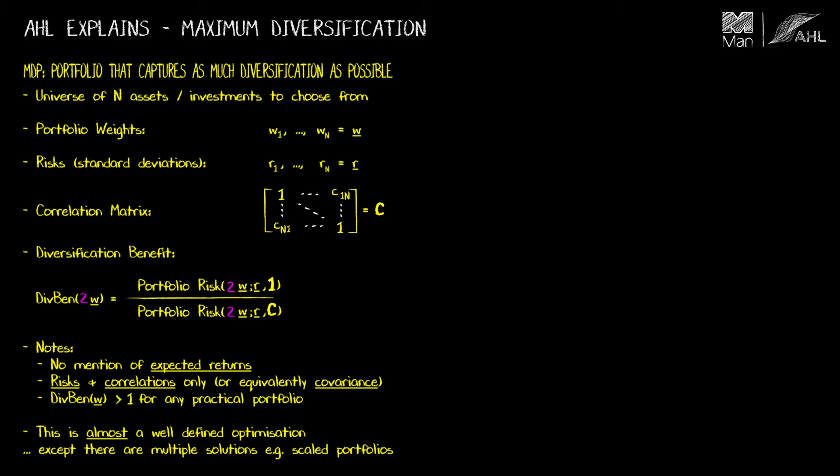For example, if you were to double the weights in any portfolio, then both the numerator and the denominator in the diversification benefit formula will also double, and so the diversification benefit, the fraction in other words, will remain unchanged.